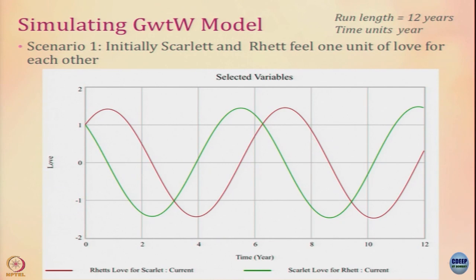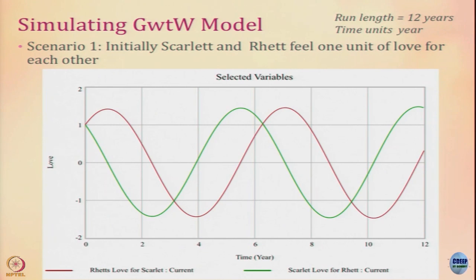Both love each other, but as Scarlet is going to dislike him as he loves her. As long as love is somewhat positive, his love increases. But when she starts to actively scorn and dislike him, his love falls and he starts to ignore her. When he starts ignoring her, her dislike reduces and she slowly falls back in love with him. Once she starts loving him, he reciprocates and the cycle continues. You get a nice oscillating system — Rhett's love for Scarlet and Scarlet's love for Rhett — because of the negative feedback within the system.